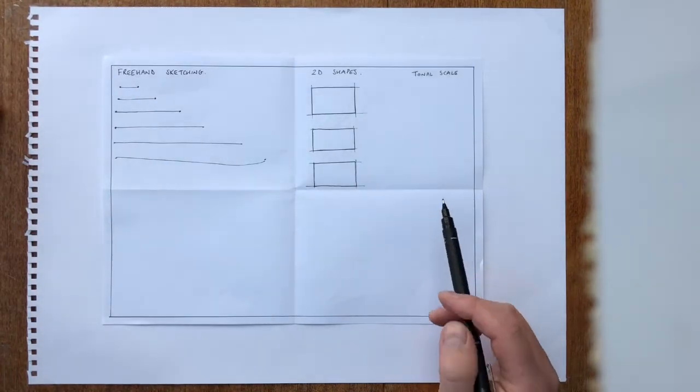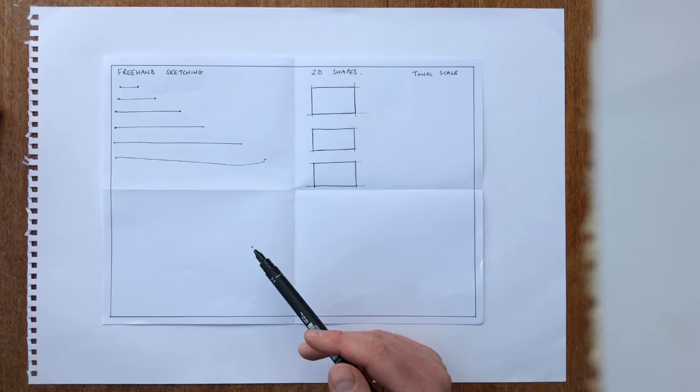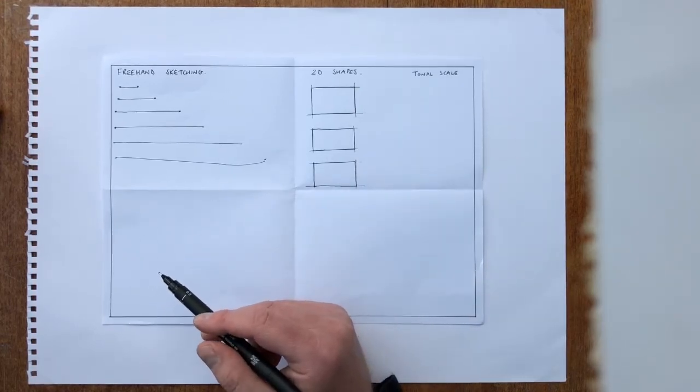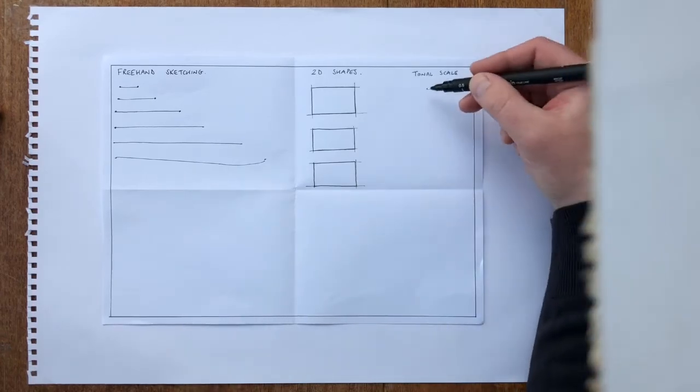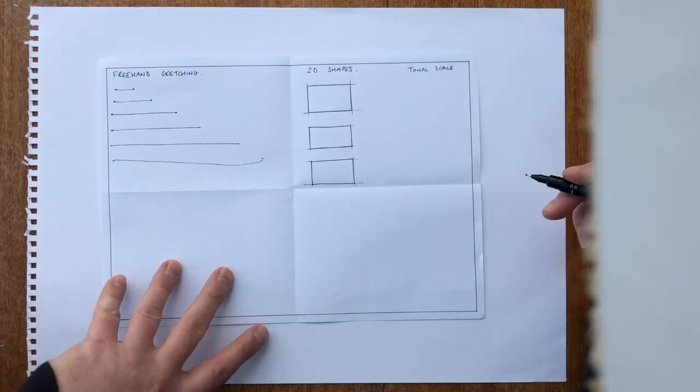So, 2D shapes. Again, we're trying to remember the techniques we've learned in freehand sketching. About making sure we sit up straight with the elbow off the desk. We turn our paper and we move our arms to get a nice straight line. We're now going to do a tonal scale across here. And this is us going to start adding some colour.